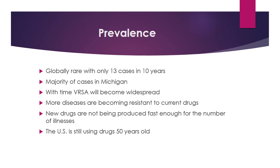The prevalence of VRSA is globally rare, with only 13 cases in 10 years in the United States and a few more in other countries. The majority of cases are in the United States, primarily Michigan. With time, VRSA will become more widespread. More diseases are becoming resistant to current drugs, and new drugs are not being produced fast enough. In fact, the US is still using drugs that are 50 years old in today's modern medicine.